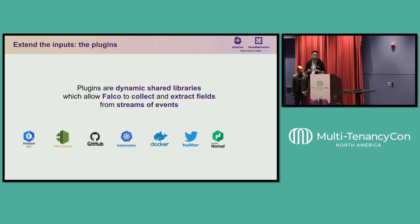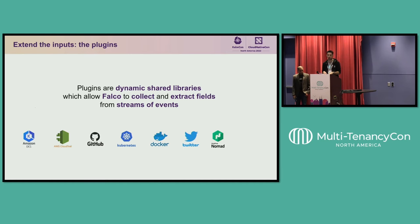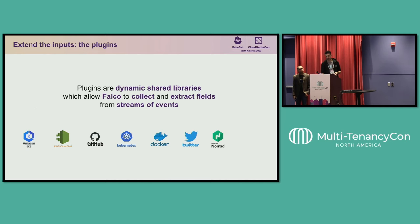We also have plugins. At the beginning, Falco was only able to collect syscalls and apply rules over them. Almost a year and a half ago, we created a plugin framework, so now Falco is technically able to ingest any stream of events you may have — basically logs. Right now we have plugins to collect EKS logs, CloudTrail, GitHub events, Kubernetes native audit logs, Docker, Nomad (we created that plugin with HashiCorp). In the future, we may also have a Paralus plugin, because Paralus creates audit logs and we could ingest these into Falco to create rules and alert your teams.